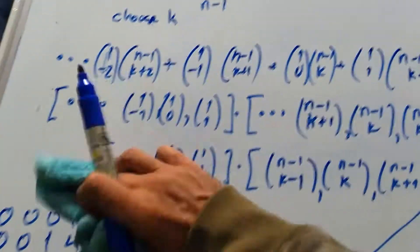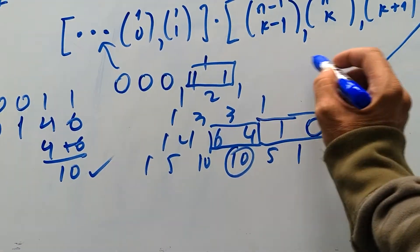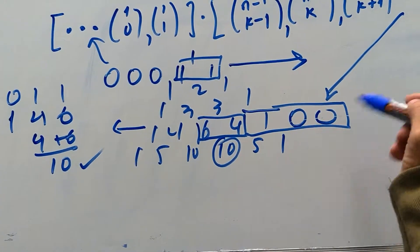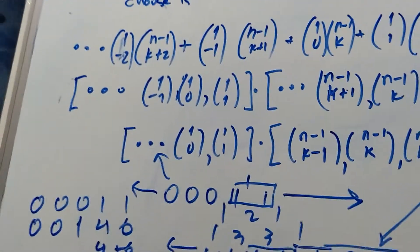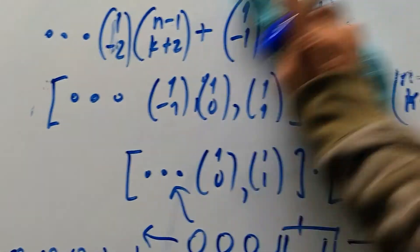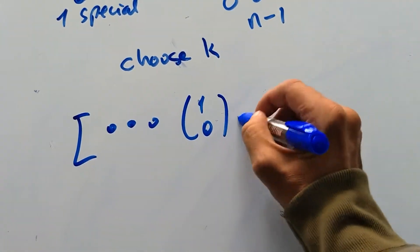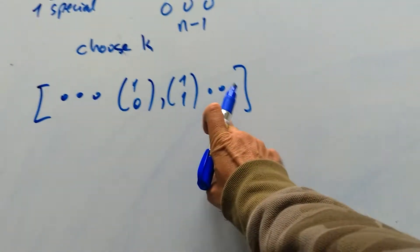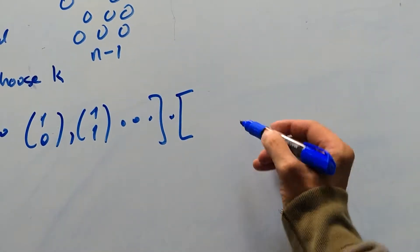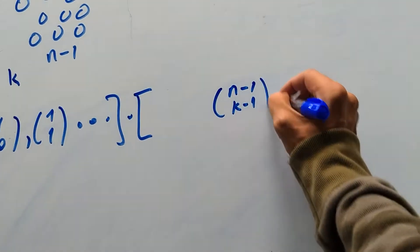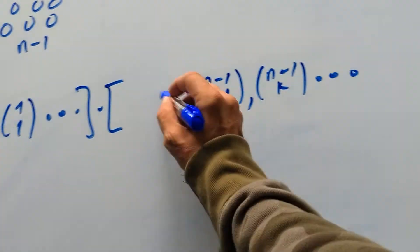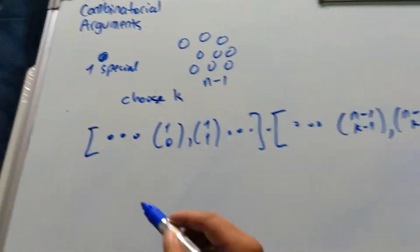Let's put it all together. Why can't I extend both directions? I should be able to extend this way, and this way, and all directions. So I'm going to write one final formula: (1 choose 0), (1 choose 1), all the way, as many terms as you like, dot product with the reversed row containing N minus 1 choose K terms extending in all directions. An amazing formula for N choose K.